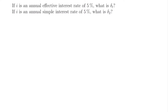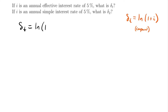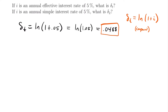This is going to use one of the formulas we know for the force of interest. In the case of an annual effective interest rate, which is a compounded rate, δ(t) is equal to the natural log of 1 plus that effective annual interest rate. So δ(t) = ln(1 + 0.05) = ln(1.05), which if we plug into a calculator gives us about 0.0488. That would be the answer for that particular question.